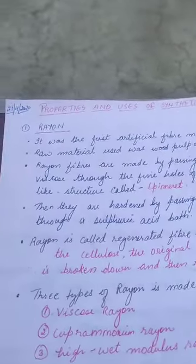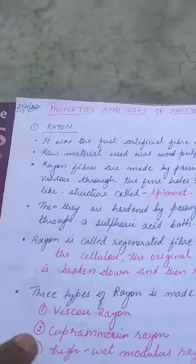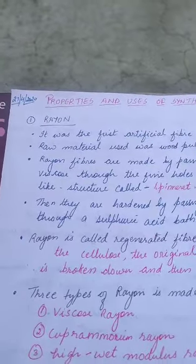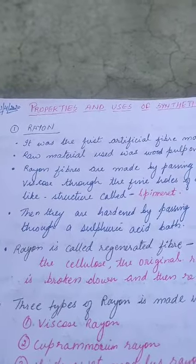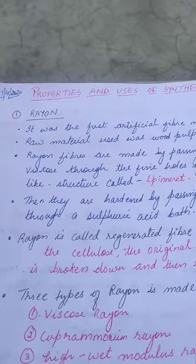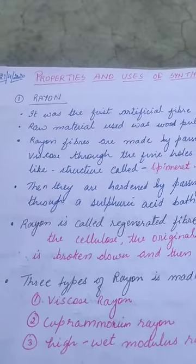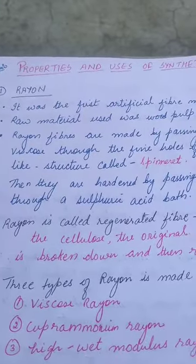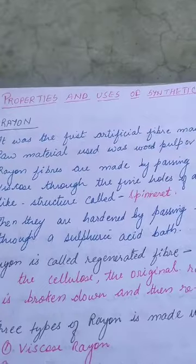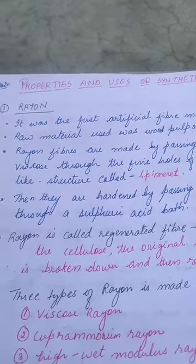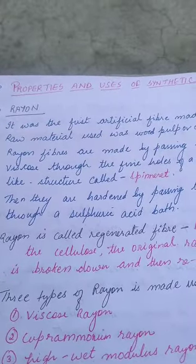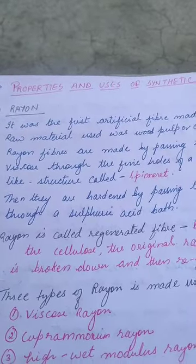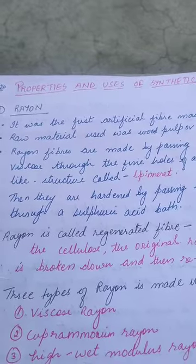We have different types of synthetic fibers. First, we will start with Rayon. Rayon was the first artificial fiber made — it was the first man-made fiber. The raw material used was wood pulp, or we can call it cellulose. Cellulose is a component of plants and is a polymer made up of units of glucose.